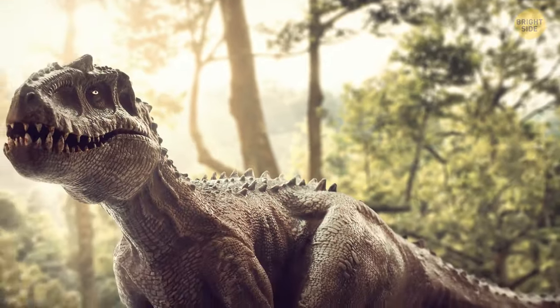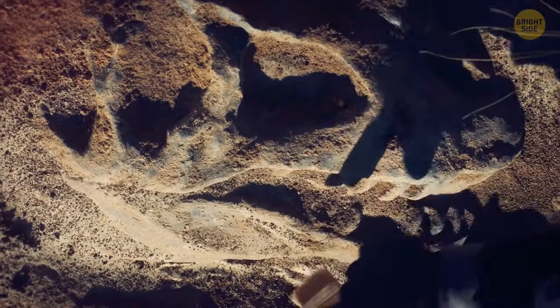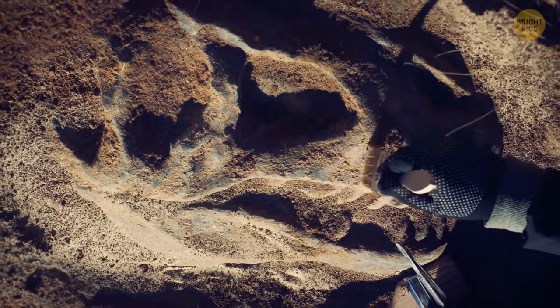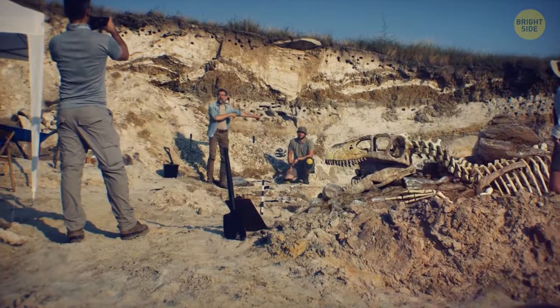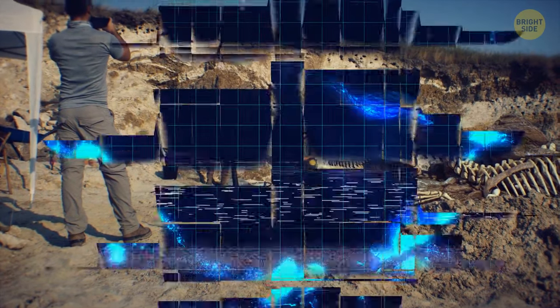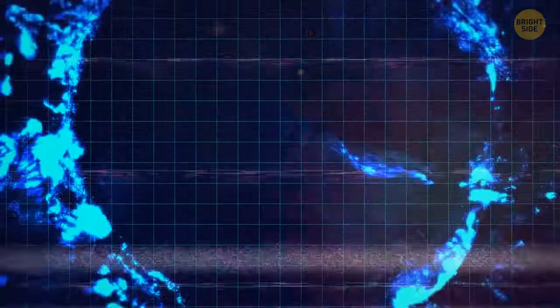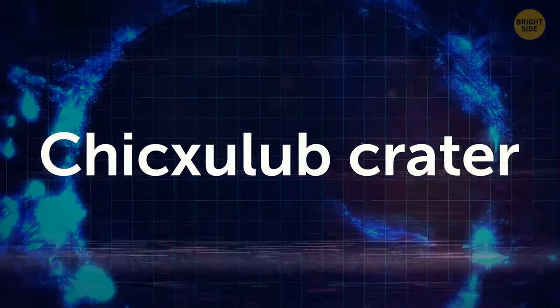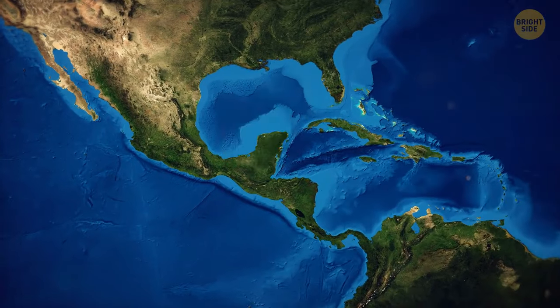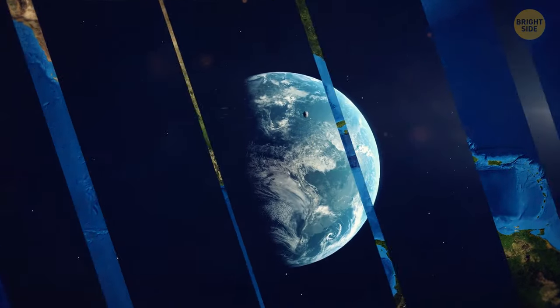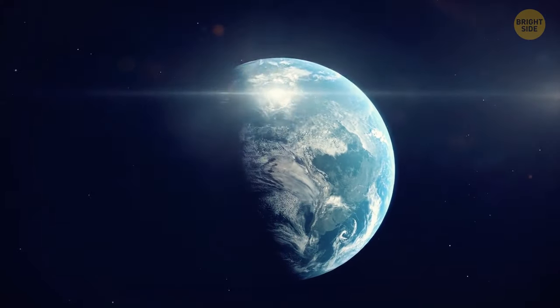Remember dinosaurs? I don't. I wasn't around then. But they disappeared a long time ago. Yet how that happened was still up for debate within the scientific community for a very long time. Up until 1991, no less, the year the Chicxulub crater was discovered. That's a big hole located underneath the Yucatan Peninsula in Mexico. Many claim it was formed when a giant asteroid crashed on Earth.